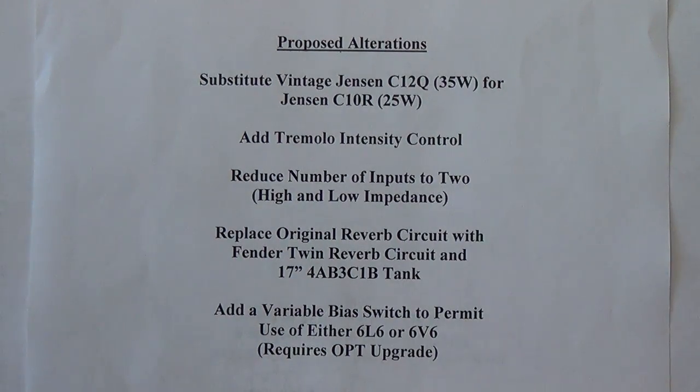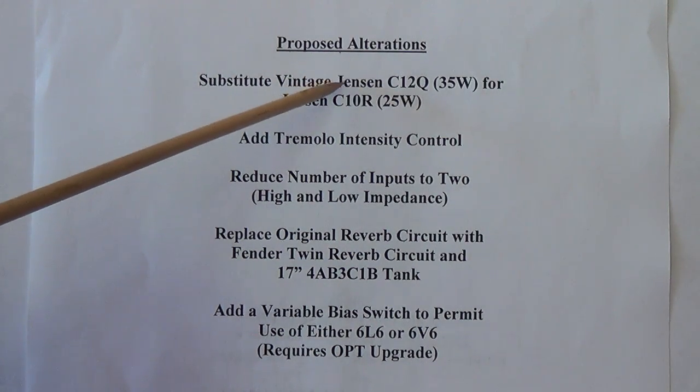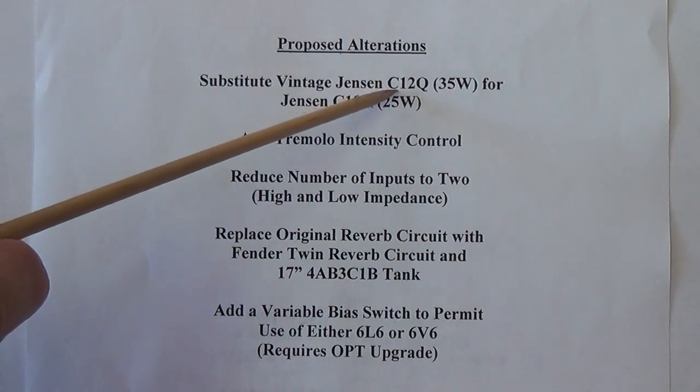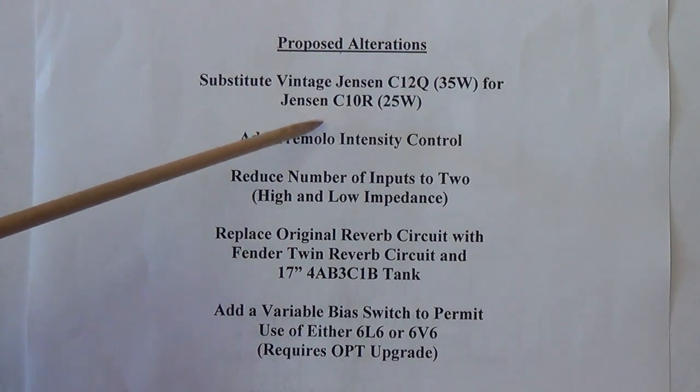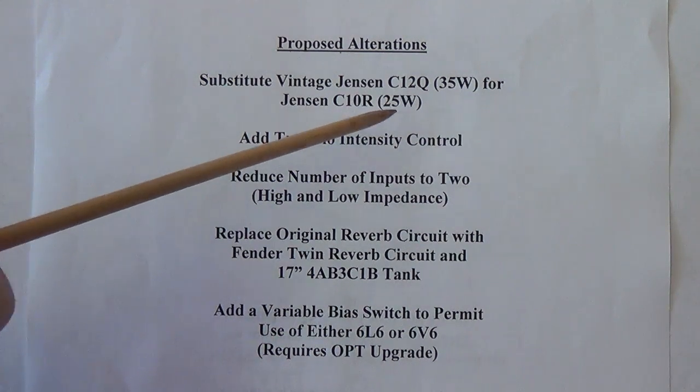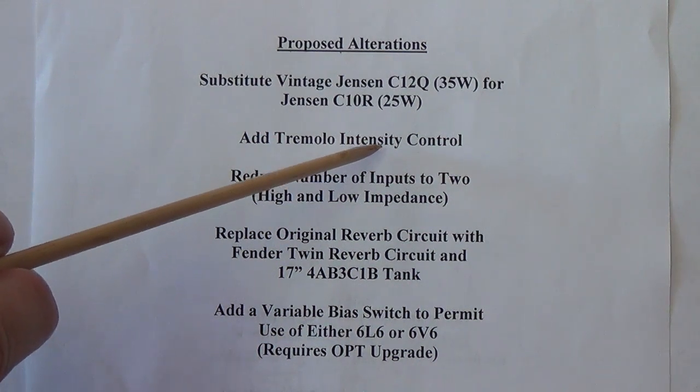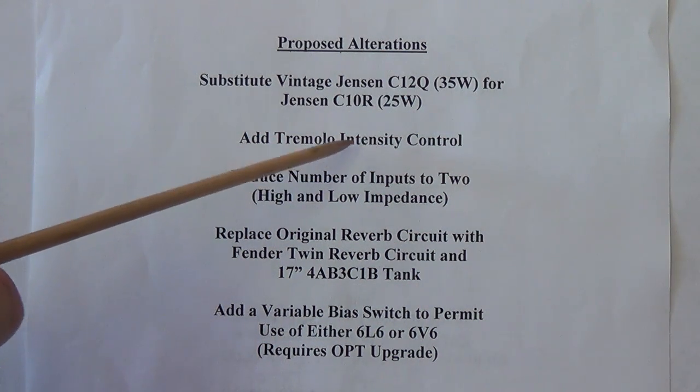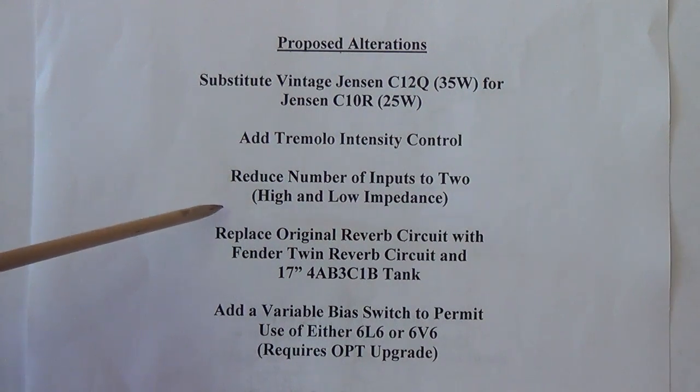So now to summarize the proposed alterations let's go through them. Number one we're going to substitute a vintage, and it's from around 1965 I think so it'd be very appropriate, a C12Q 35 watt speaker for the 10 inch Jensen C10R speaker that was originally used in the amplifier. I'm going to add a tremolo intensity control which is in effect a volume control for the tremolo and will regulate how much of the signal from the tremolo circuit is sent to that cathode of the first 12AX7 triode.